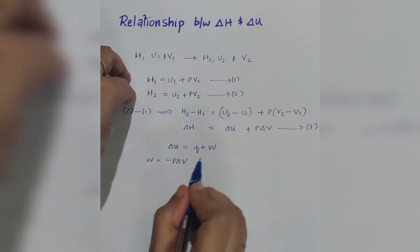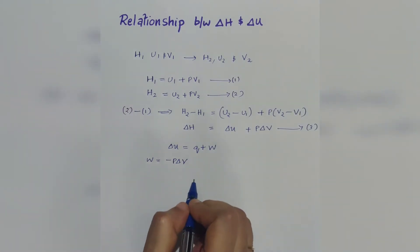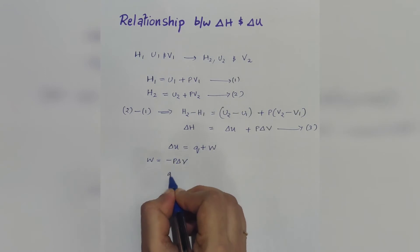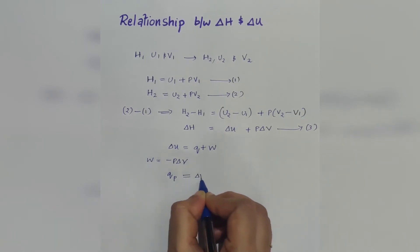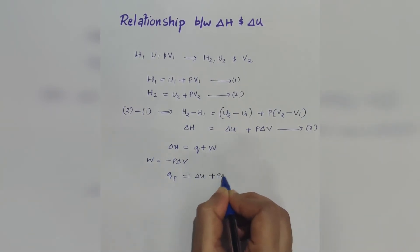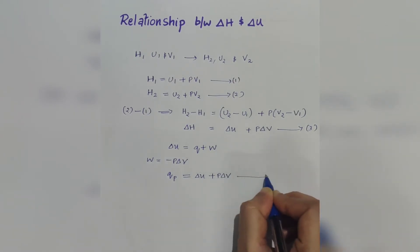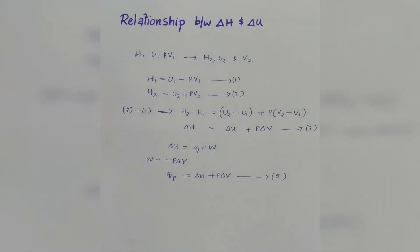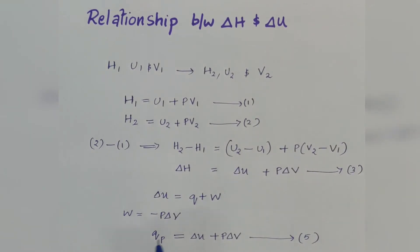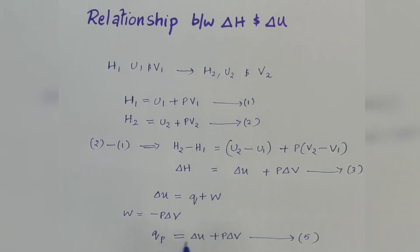The heat absorbed at constant pressure is denoted by QP. Then QP is equal to delta U plus P delta V. This is equation number 5.